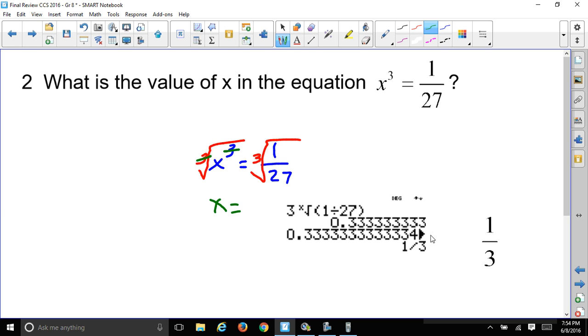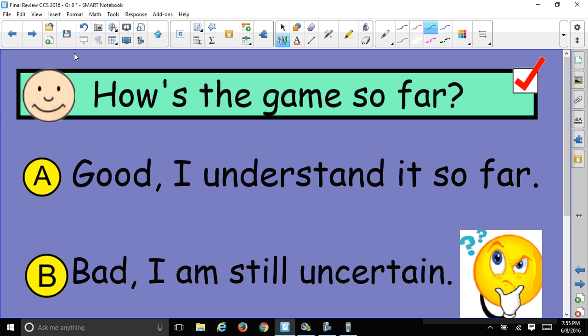And so, 1/3 to the 3rd power is 1/27. So, if you multiply 1 times 1 times 1, that'll give you the 1. And 3 times 3 times 3, that'll give you 27, because 3 times 3 is 9, 9 times 3 is 27. So, that's a good problem.